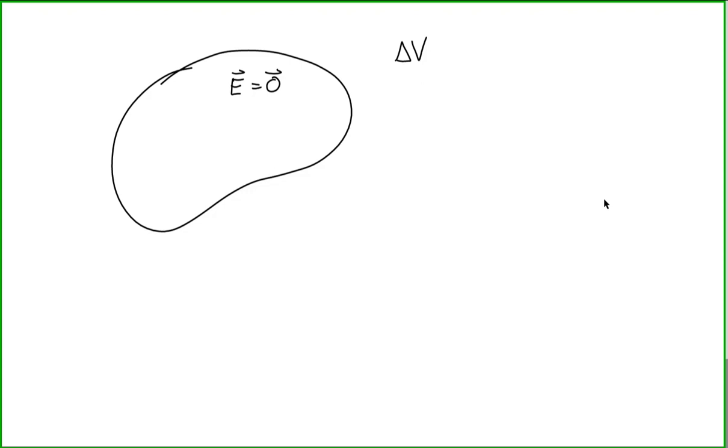If we are on the inside of the conductor, we will call this a point A and we will call this a point B. So the change in electric potential or the potential difference between point A and point B is equal to minus the line integral of the electric field between those two points.